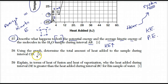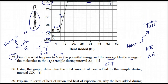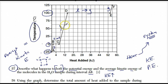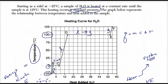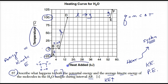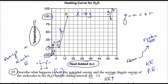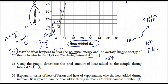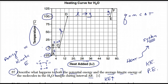Number 58: using the graph, determine the total amount of heat added to the sample during interval C-D. In interval C-D we have the liquid phase. We don't need Q = mcΔT here because they're telling me heat is being added and they want it in kilojoules. From C to D we need to read the graph carefully. The scale goes up by 4, so 8, 16 — looking at the points on the graph.